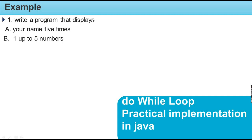Example: write a program that displays your name five times, and generates numbers one up to five. We want to display this. We can use a for loop or while loop to accomplish this. We want to generate numbers one up to five.